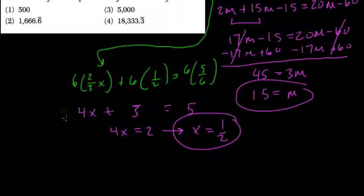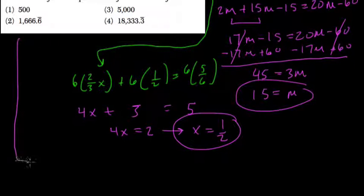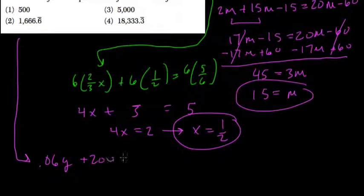Okay, so here I'll write this further down: 0.06y plus 200 equals 0.03y plus 350.